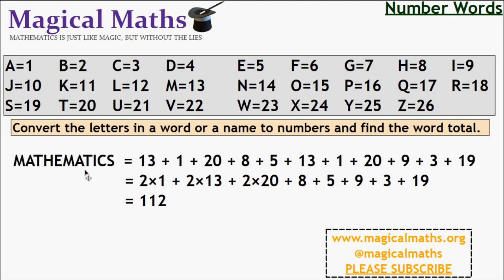So the word mathematics is 13 plus 1 plus 20 plus 8 all the way up to 19. Let's rearrange this. We've got two m's, so it's 2 times 1. We have two a's, so 2 times 13, 2 t's, 2 times 20, and add all the rest together, I get 112.